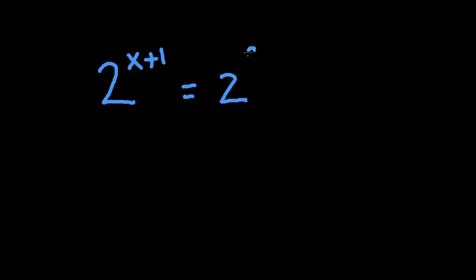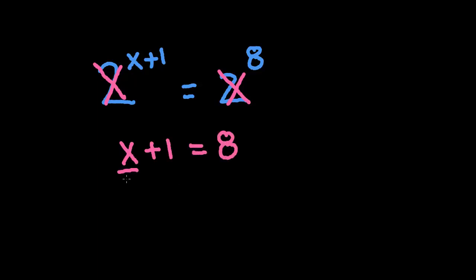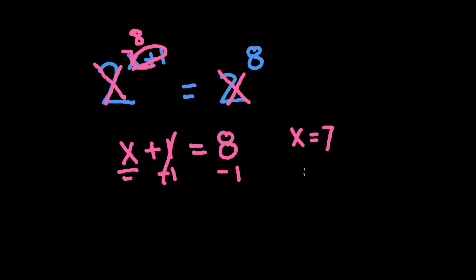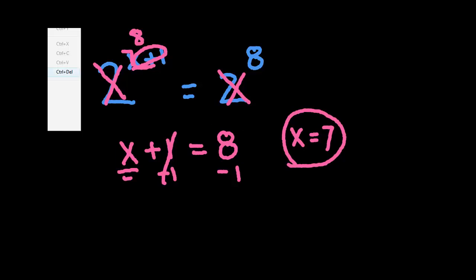Let's say we have 2 to the x plus 1 is equal to 2 to the eighth. Again, we have the same base, so we can just cross off these bases and pretend they're not even there. We can just say, what does x plus 1 need to be in order to get 8? We can subtract 1 from both sides and find out that if x is 7, then 7 plus 1 turns that into an 8. 2 to the eighth is equal to 2 to the eighth, and our problem works. So x is equal to 7.